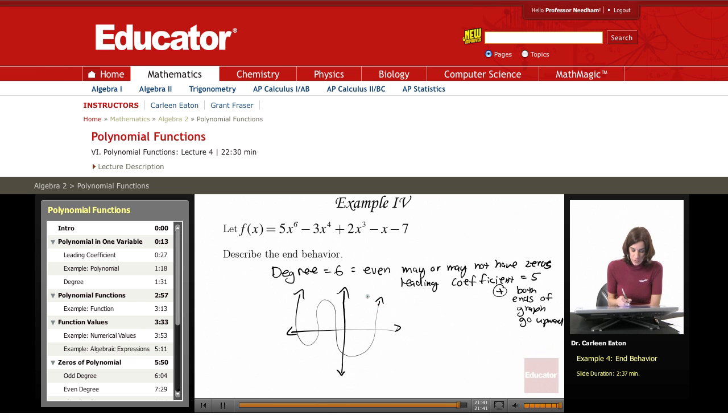What does that tell me about the end behavior? What this tells me about end behavior is that when x is large, way out here, y is large, or the function is large.